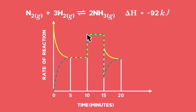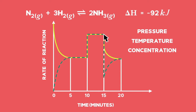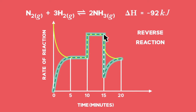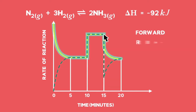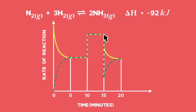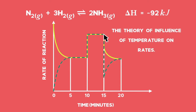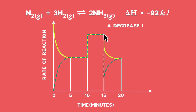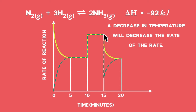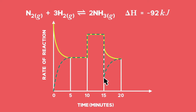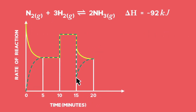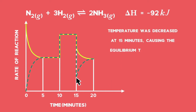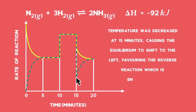We now investigate the graph further and note that there is a change at 15 minutes. Remember that pressure, temperature, and concentration affect equilibrium — we need to investigate which one of these changes is the most plausible. The dotted line represents the reverse reaction and has decreased sharply, and the rate of the forward reaction has also decreased. For the rate of both to be affected, we turn to the theory of the influence of temperature on rates. A decrease in temperature will decrease the rate of reaction. For the reverse reaction to be influenced so sharply, the reverse reaction must be endothermic — and for the Haber process, that is correct. So we can conclude that the temperature was decreased at 15 minutes, causing the equilibrium to shift to the left, favouring the reverse reaction which is endothermic.